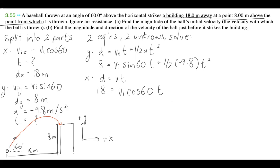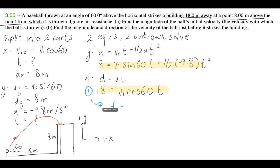We have two equations and two unknowns, so now we can solve. We'll use substitution. From equation one, isolate for t: t = 18 / (vi·cos60). Then plug this expression for t into equation two.